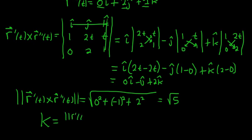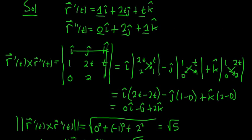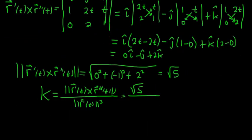So recall the formula we were using is the magnitude of r'(t) crossed with r''(t) over the magnitude of r'(t) cubed. So this is the square root of 5 over, and our r', let me scroll up because I lost it. There it is, 1, 2t, t. So r'(t) was 1, 2t, and then t. That's in component form.